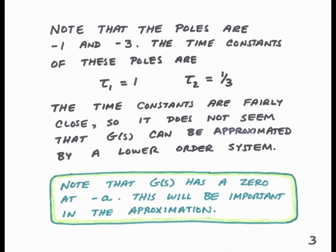The key is the zero. This transfer function G has a zero at minus a. And that's going to be important to whether we can approximate this as a lower-order system or not.